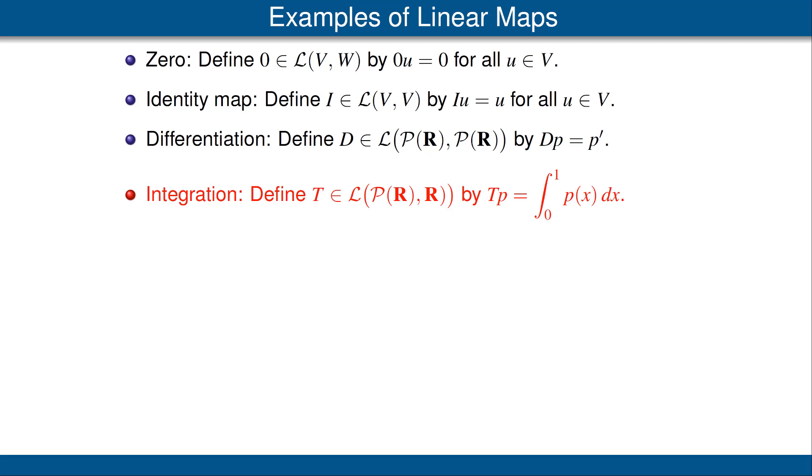Our next example is an integration linear map. This will be defined on the vector space of all polynomials with real coefficients into the vector space R of real numbers. We'll define it as follows: T of a polynomial p will be the integral from 0 to 1 of p. The verification that T is a linear map relies on properties of integrals, namely the integral of the sum of two functions is the sum of the integrals, and the integral of a constant times a function is equal to that constant times the integral of the function. Notice how properties from calculus about derivatives and integrals become intertwined with the idea of linearity.